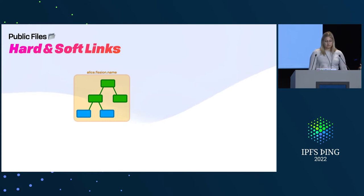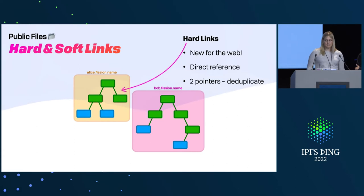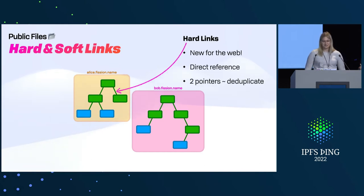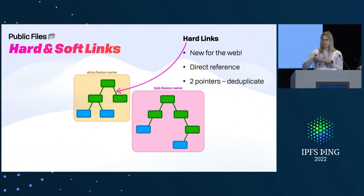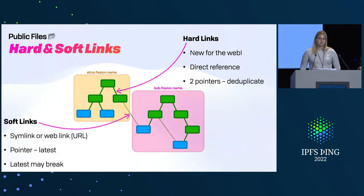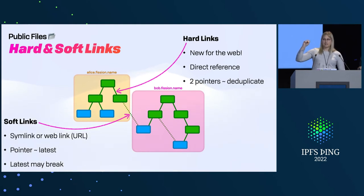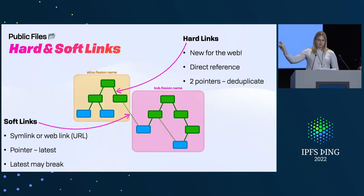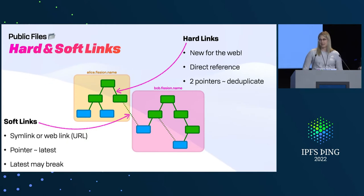Hard and soft links. Content addresses give us a new kind of link — you can think of this as a hard link from traditional file systems, where it says it's exactly this file. If you have the same file multiple times, you get deduplication and all the benefits we love from IPFS. But we also found we needed support for soft links or symlinks, which really behave like a URL. If you have a pointer to something — maybe in somebody else's file system — or you want to track the latest version of something, you give it a URL, and you get all the same trade-offs URLs have: you might break that link, but you're always tracking the latest version.